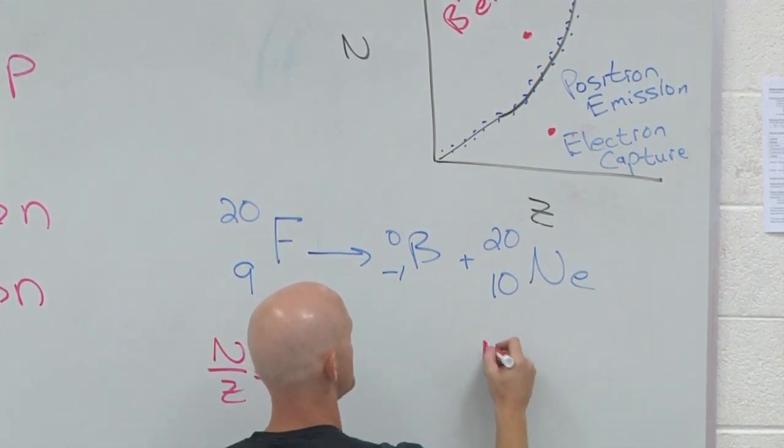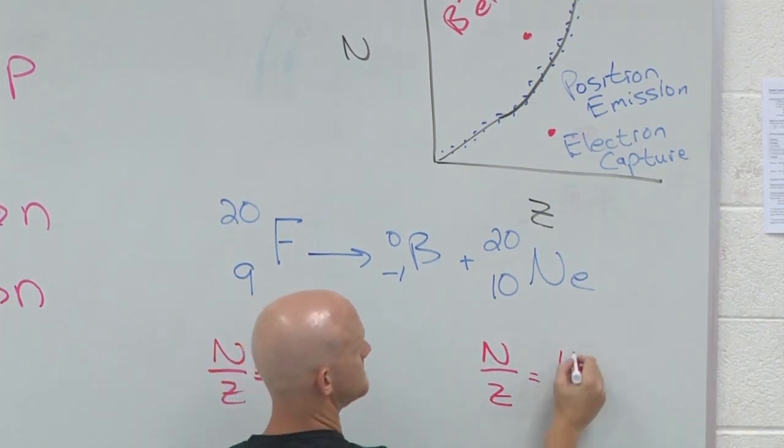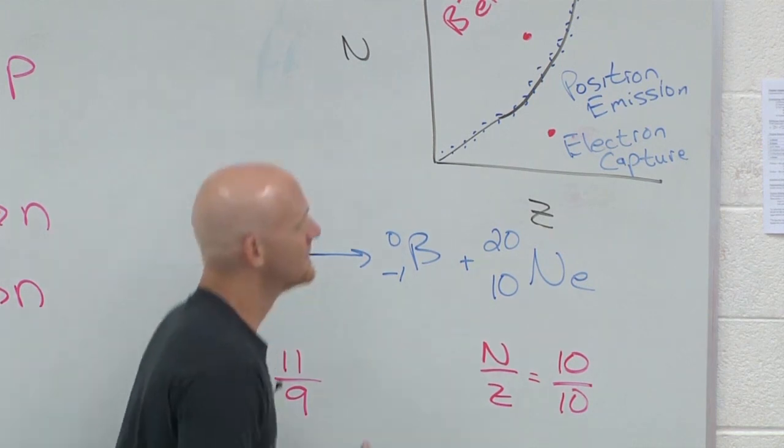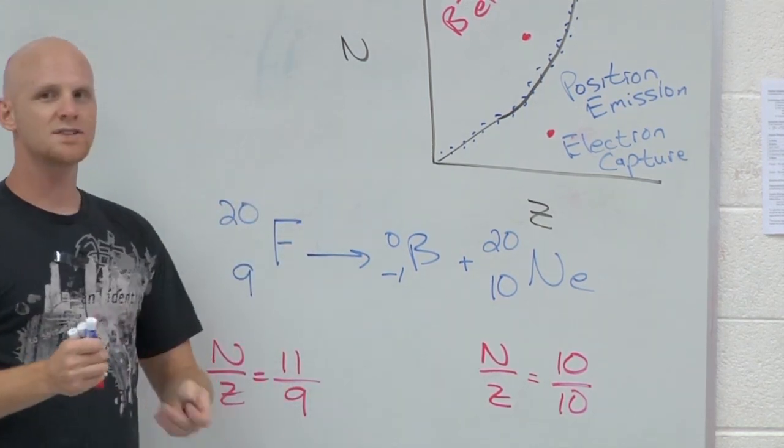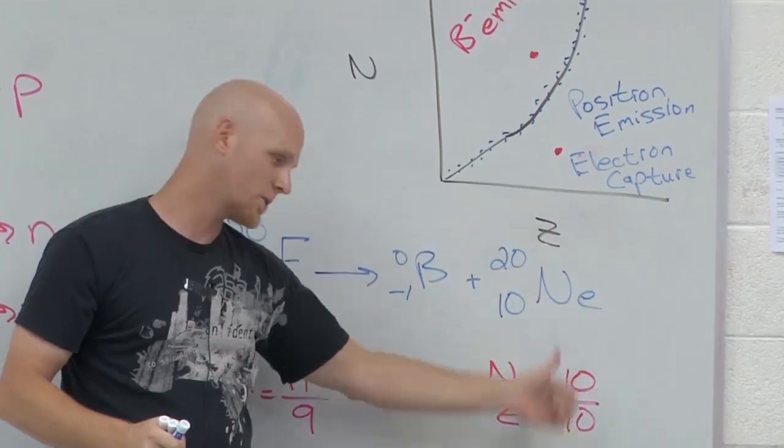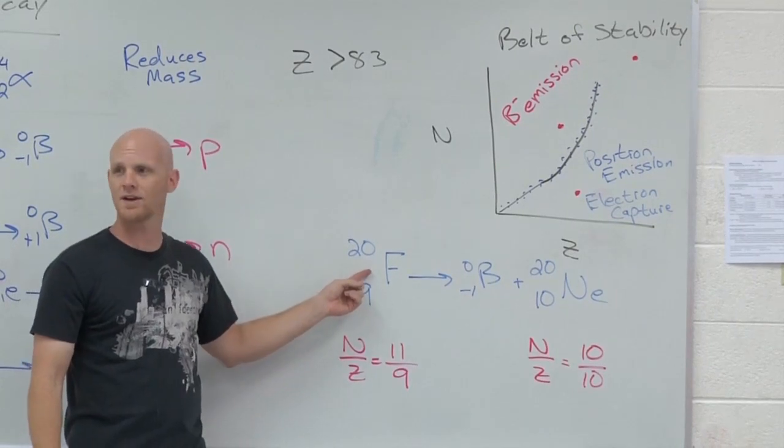And now what is the n over z ratio? Ten over ten. Is he happy now? Yeah. So by converting one of his neutrons into a proton, he now has an n over z ratio of exactly one. He's totally happy by doing this. So that's the kind of question you could get.